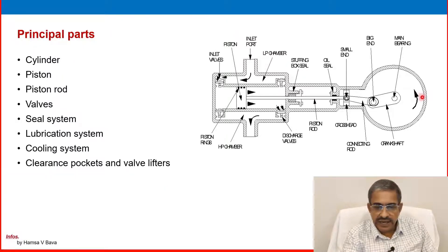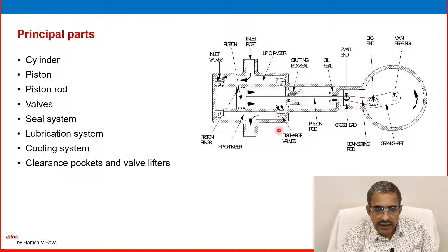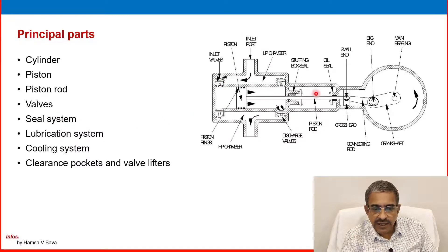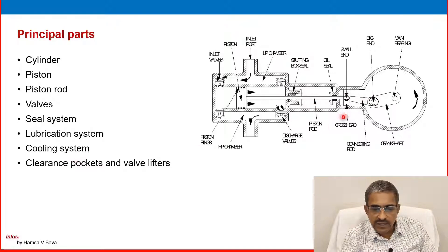In the cylinder area you can see the cylinder, the piston, and the piston rod. There are valves — four valves total. Seal systems and oil seal systems are present, along with lubrication systems and cooling systems connected to the cylinder. Clearance pockets and valve lifters are also part of the cylinder assembly.